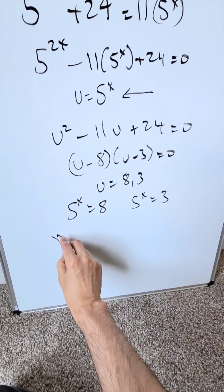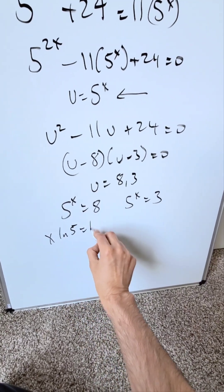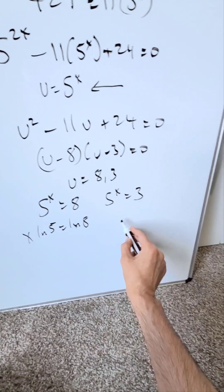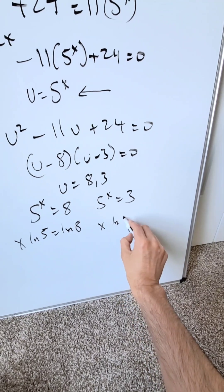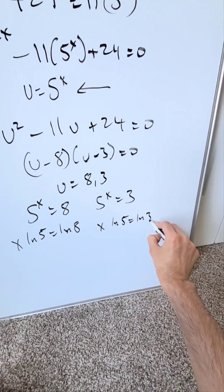Bring in your properties of logs. I have here x natural log 5 is equal to natural log 8. I'm looking here at x natural log 5 is equal to natural log 3.